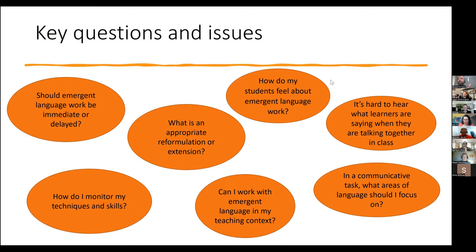Emergent language isn't just limited to error correction or making students say something correct — 'correct' varies depending on context. It can incorporate many different ways through which language can emerge. However, working with emergent language isn't without its problems. Danny and I, and teacher trainers everywhere, have found that teachers and trainees have serious concerns. Common questions include: should feedback be immediate or delayed? What language do I give them? What's appropriate? How do students feel about it? How do I get better at doing it? Can it work in any context? And it's really hard to hear what learners are saying when they're all speaking at once. Today we'll look at three areas to address these problems.